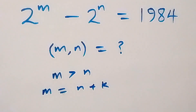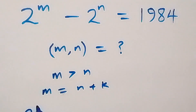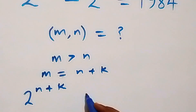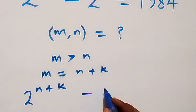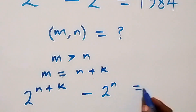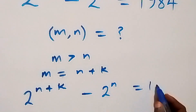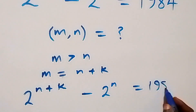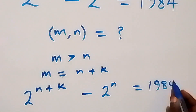So what we have now: we can write it as 2 raised to power (n + k), minus 2 raised to power n, and this equals one thousand nine hundred and eighty-four.